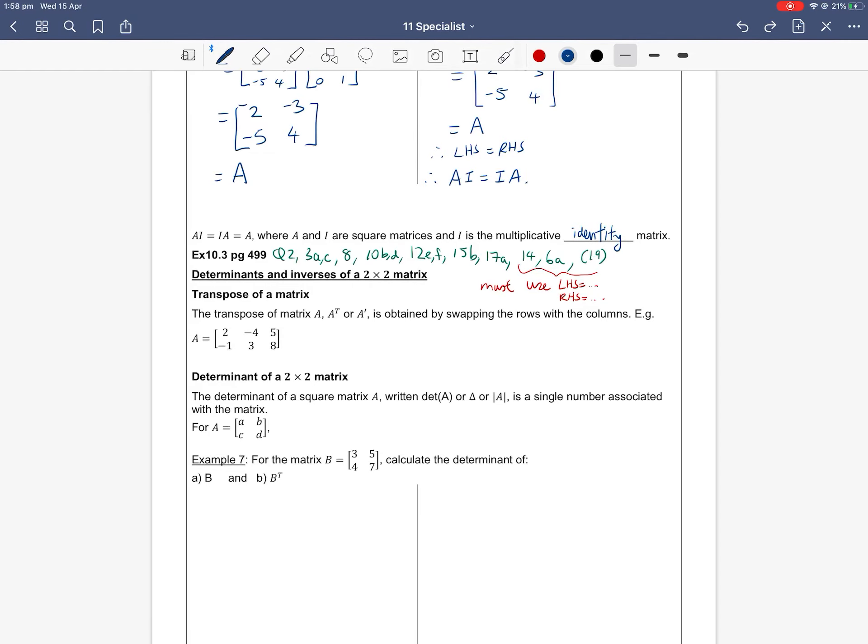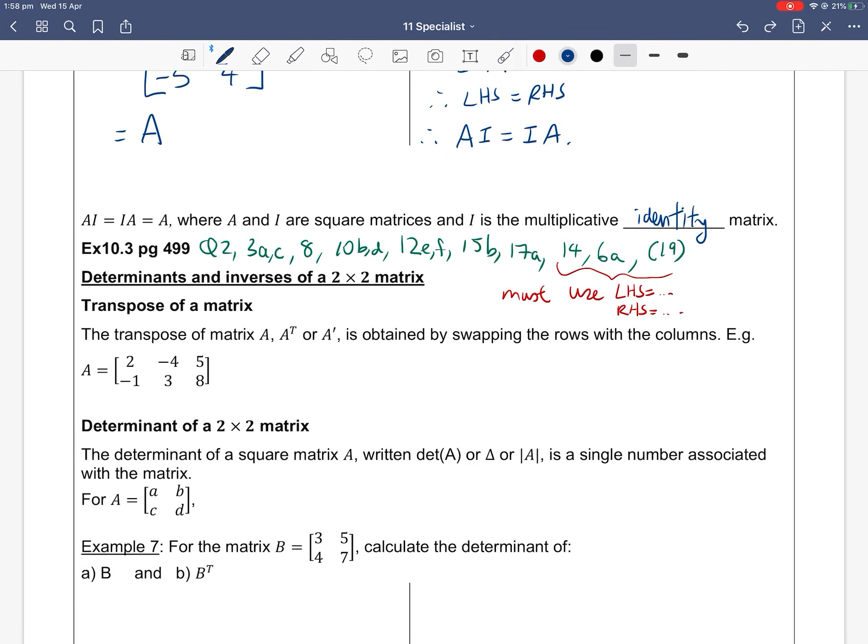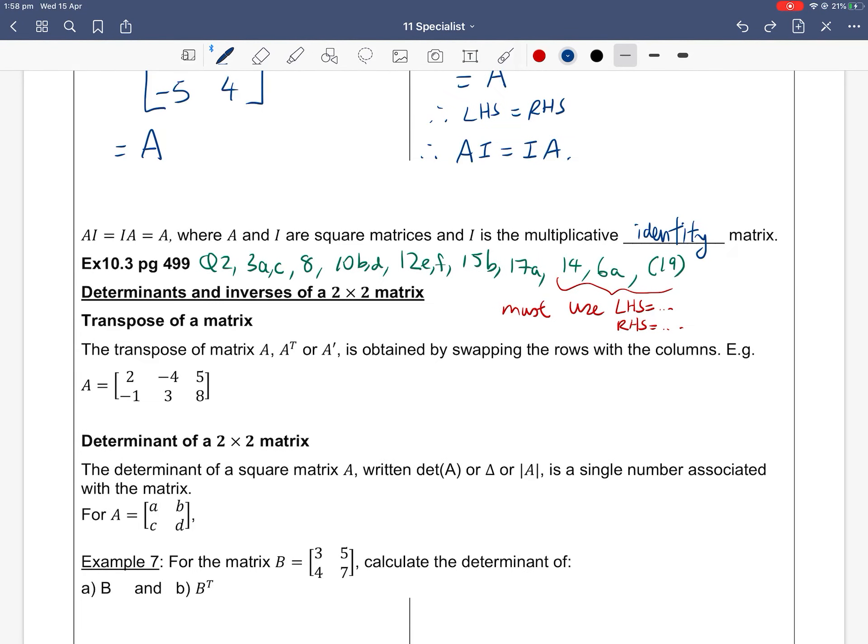And inverses of a 2×2 matrix. So first we're going to start off with this word called transpose. The transpose of a matrix, which we write with a T or A', is obtained by swapping the rows with the columns.